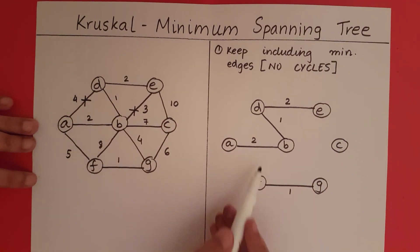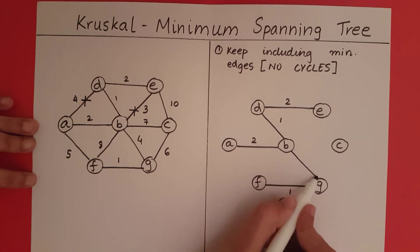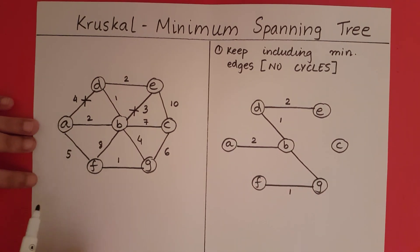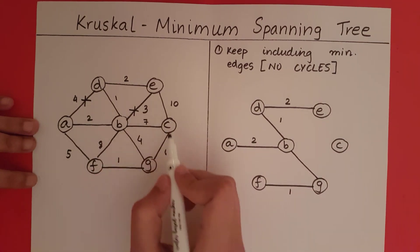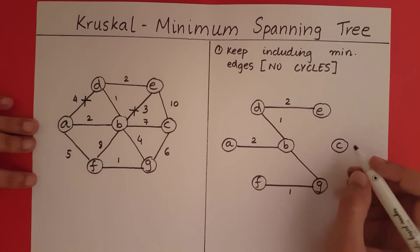Can I include this 4? Yes, because that does not form a cycle. Now I go to 5. Can I include this 5? No, because that forms a cycle. What is the next smallest? We have 6. Yes, we can include 6.